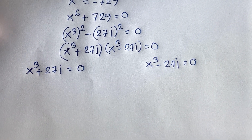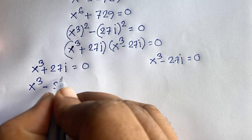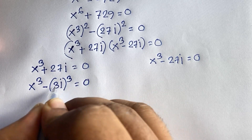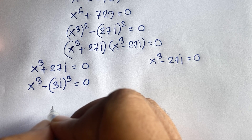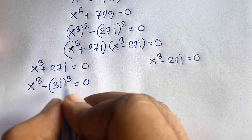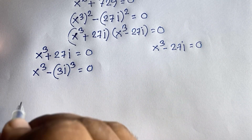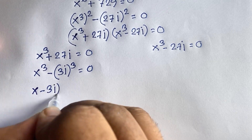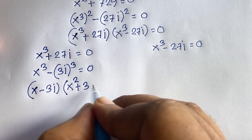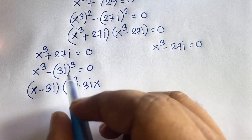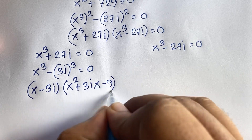For Case 1, x cubed plus 27i equals 0. Note that 27i can be written as minus 3i whole cubed, because 3 cubed equals 27 and i cubed equals minus i, so minus times minus gives plus i. Applying the sum of cubes formula a cubed plus b cubed equals (a plus b)(a squared minus ab plus b squared), with b equal to minus 3i: we get x plus minus 3i, times x squared plus 3ix, plus 3i squared which equals minus 9, all equal to 0.